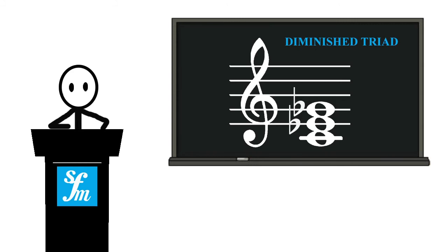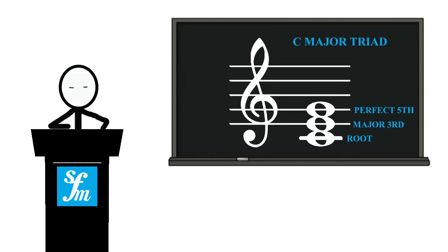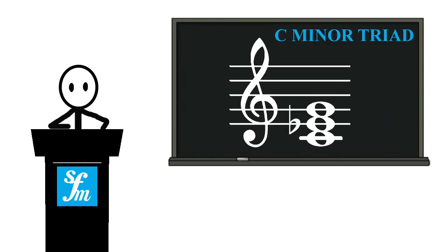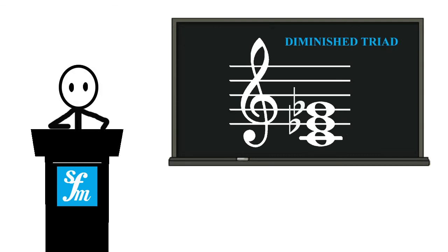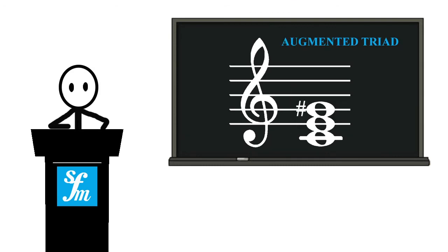These chords all share the same root, and it's the thirds and fifths that move. A major chord has a root, a major third, and a perfect fifth. A minor chord has a root, a minor third, and a perfect fifth. A diminished chord has a root, a minor third, and a diminished fifth. There is another triad which doesn't appear naturally in the scale: the augmented triad. It is the same as the major triad but with an augmented or sharpened fifth, so it has a root, a major third, and an augmented fifth.